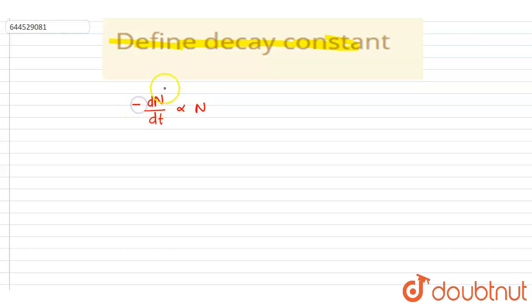So since it is the rate of decay, we will put a negative sign here. Here the proportionality constant is the decay constant, so I will write down this. This proportionality constant is called as the decay constant.